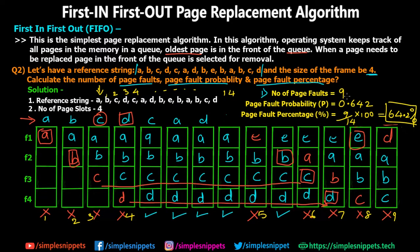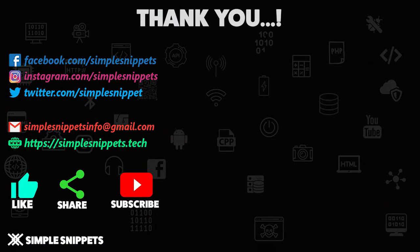That was the First In First Out page replacement algorithm. We covered the theory of what FIFO is and solved two numericals. The first was straightforward to illustrate how FIFO works, and the second was longer but not difficult, requiring three different values to be calculated.